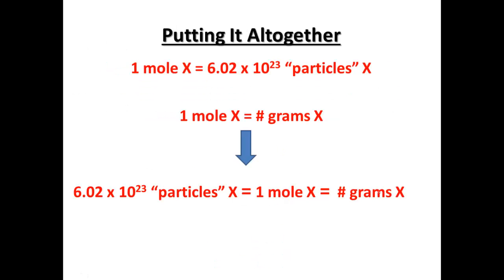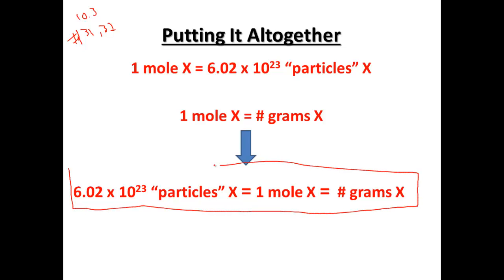Now we're going to move ahead, putting this all together. Move into your notes to number 31 and 32 in section 10.3. Above 31 and 32 in the block again: 6.02 times 10 to the 23rd particles of X equals 1 mole of X equals the number of grams of X — where X can be an element or compound. Include this above number 31 in that box. Converting between mass and particles requires molar mass and Avogadro's number.